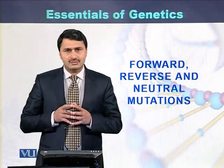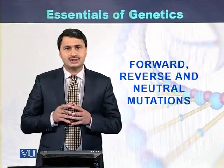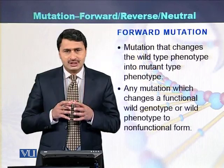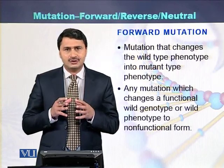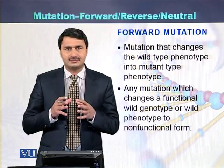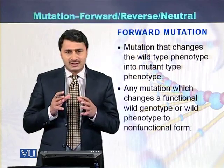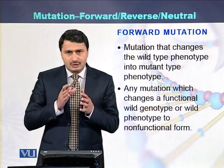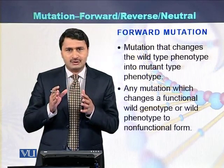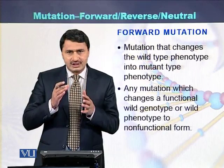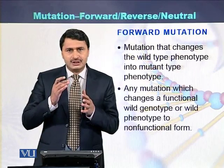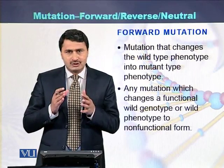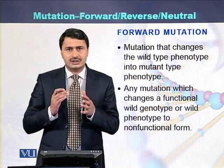Forward mutation, reverse mutation, and neutral mutation. Forward mutation is such a mutation that converts the wild type phenotype into the mutant type phenotype. With the help of such mutations, changes occur — if there is a normal phenotype, that phenotype will be converted into abnormal phenotype, or we can say the functional phenotype is converted into non-functional phenotype. Same is in case of genotype: a functional genotype is converted into the non-functional genotype.